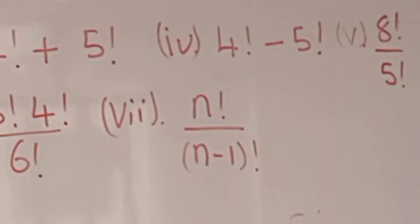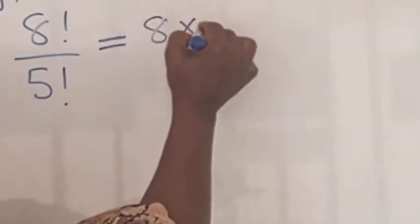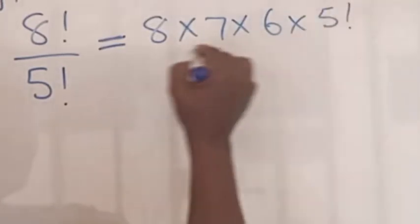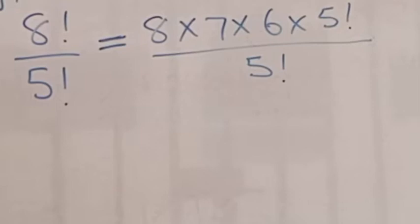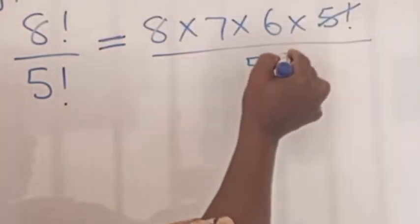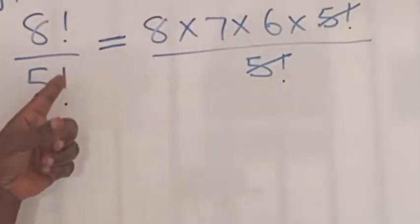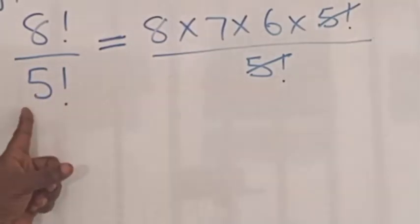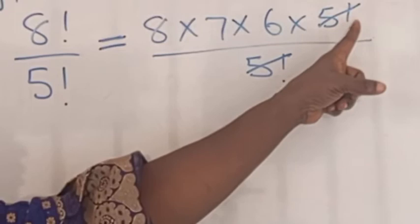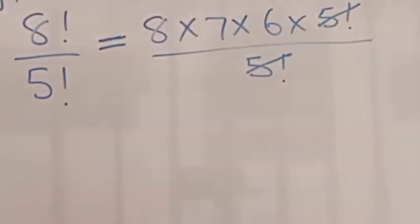Now let's compute eight factorial over five factorial. Note that it is not equal to eight over five factorial. Observe that five is less than eight, so five factorial is a factor of eight factorial. So eight factorial equals eight times seven times six times five factorial, over five factorial. The five factorials cancel, and you have eight times seven times six equal to 336.